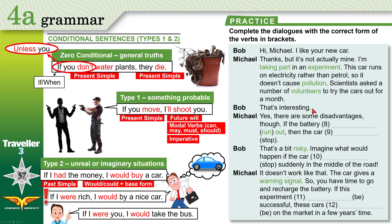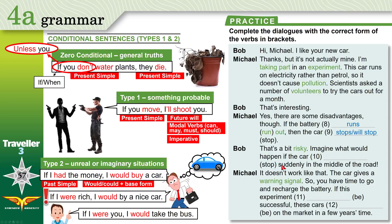'Hmm, that's interesting.' 'Yes, there are some disadvantages though. If the battery runs out' — meaning finishes — 'the car stops.' We're talking about something probable or general truth. If it's general truth: the car stops. If it's something probable, you say: will stop. 'That's a bit risky.' 'Imagine what would happen if the car stopped suddenly in the middle of the road.' We are imagining here — imaginary, past simple — if the car stopped.